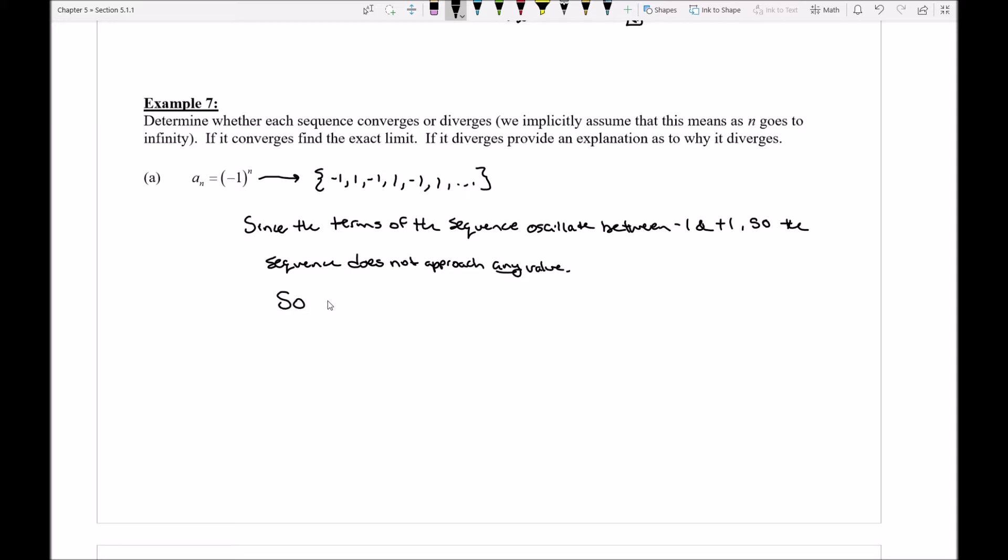Well if that's the case then, I can say that then the limit of our a sub n as n goes off to infinity does not exist. And thus, a sub n is divergent.